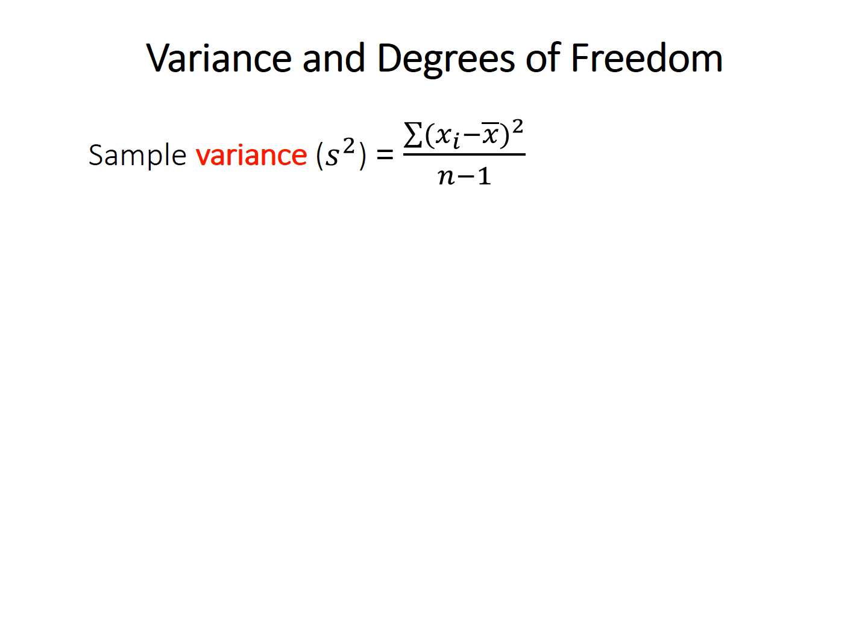So dispersion is instead measured often as something called variance. The sample variance is just given the symbol s squared. Variance is the sum of squares, as we saw on the previous slide, divided by n minus 1, where n is the sample size, the number of measurements in your sample, the number of observations. So why n minus 1? Why can't we divide just by n? Why don't we just divide by the sample size?